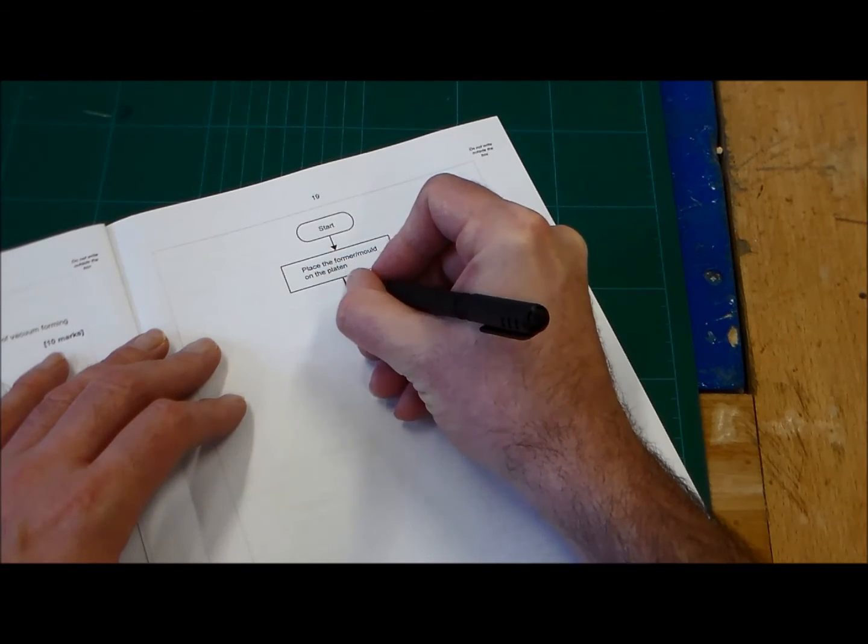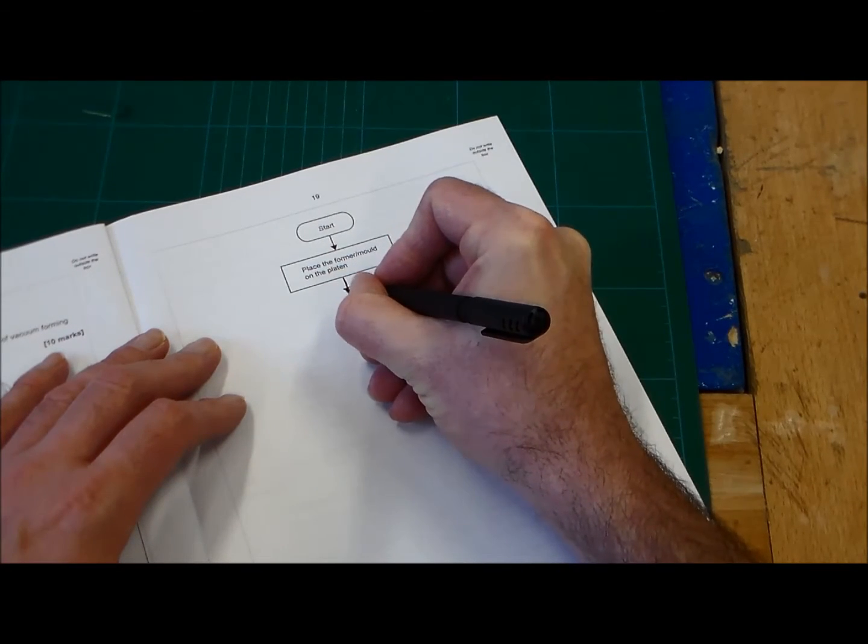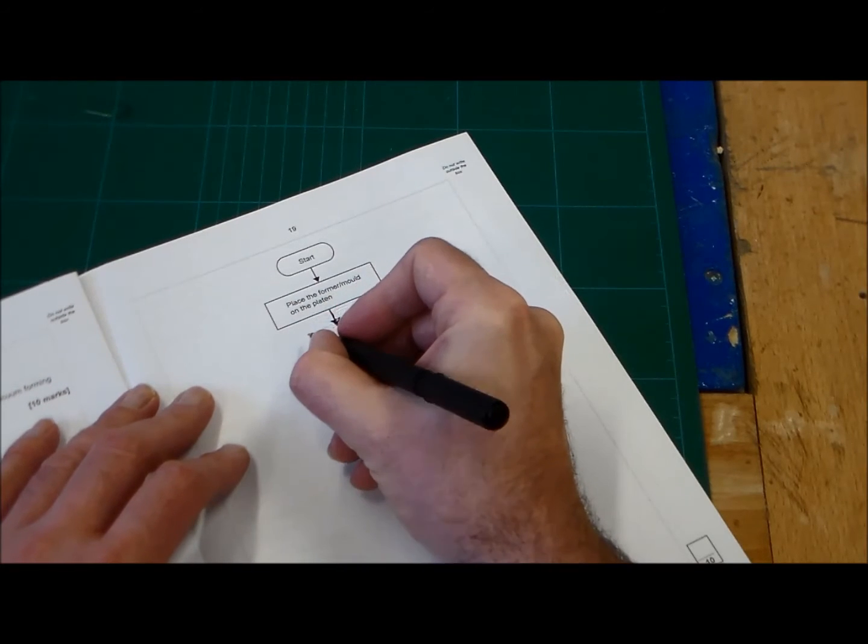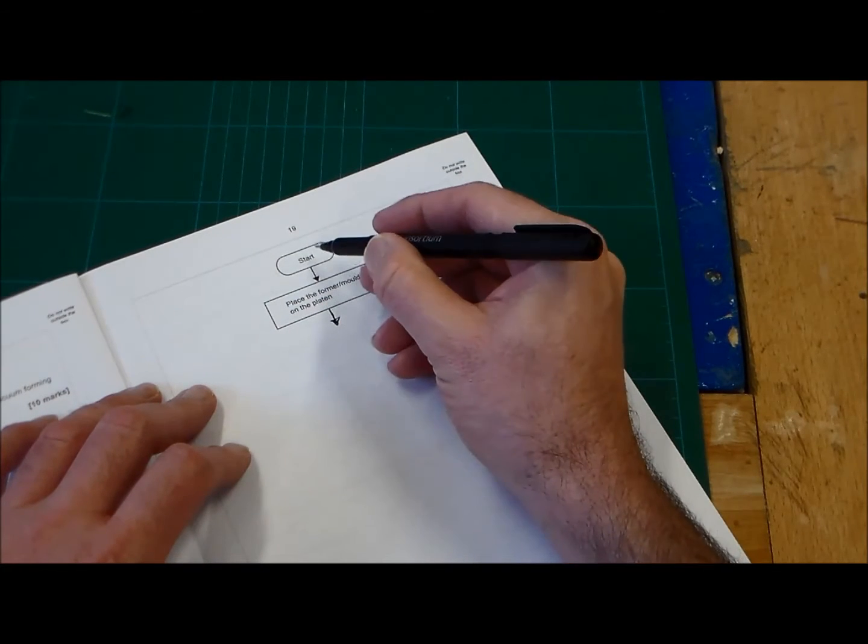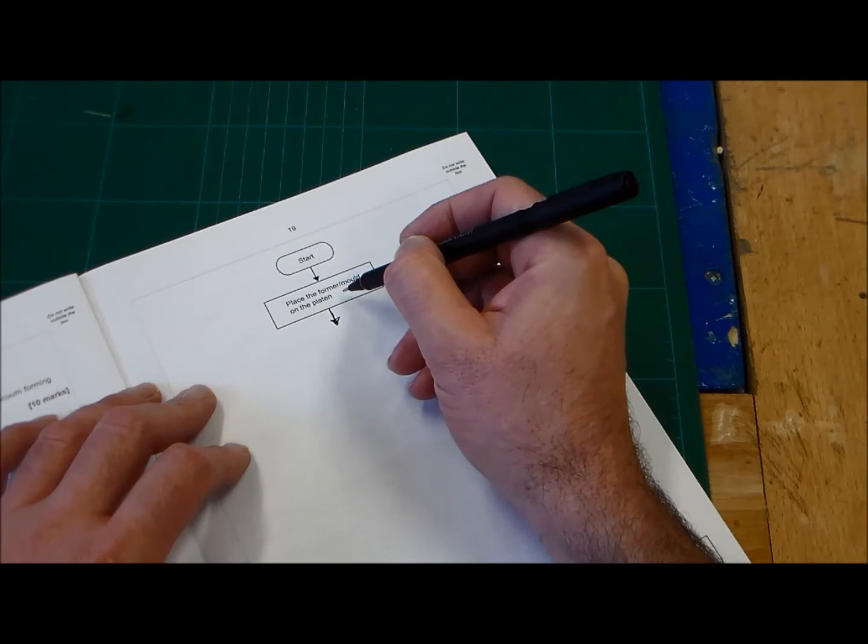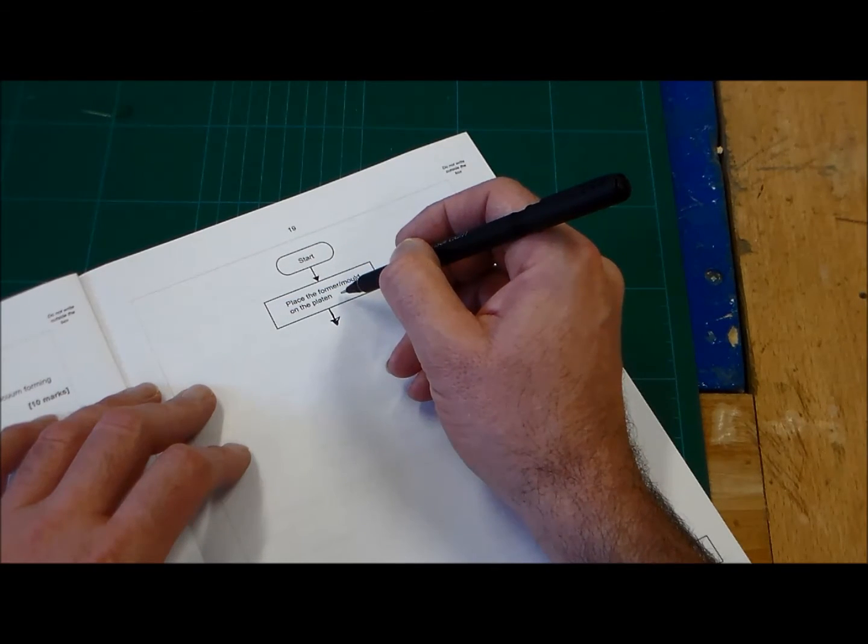So first of all, we need to use the flow arrows. So we just draw ourselves a flow arrow there. And we've got the stages. So the stages are going to be start, then first stage, place the former mould on the platen. So that's putting the mould in.